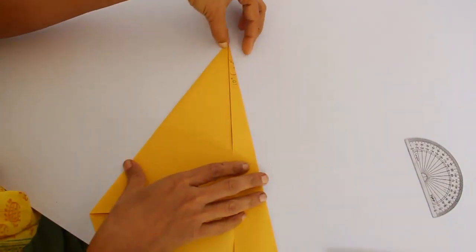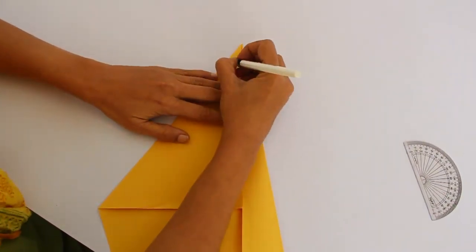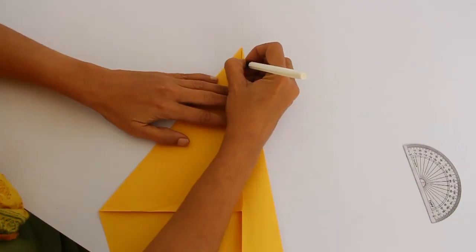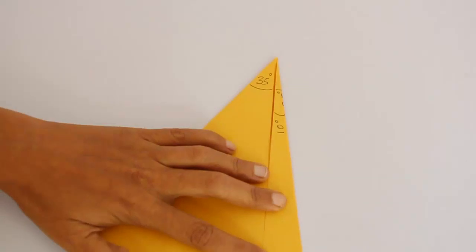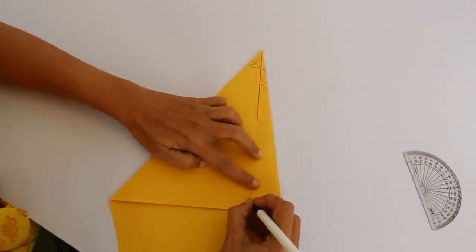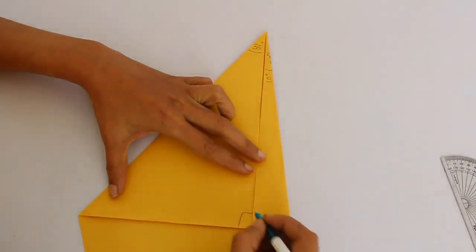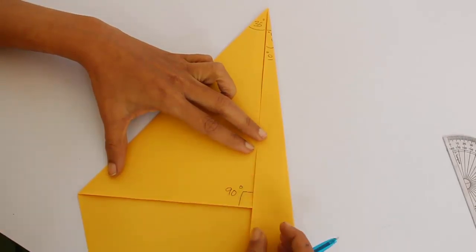Now we have folded the 70 in half, and so the remaining angle is 35 degrees, and the total here will be 35 plus 10 is 45. If we have to look at it, this is a corner and this is 90 degrees.